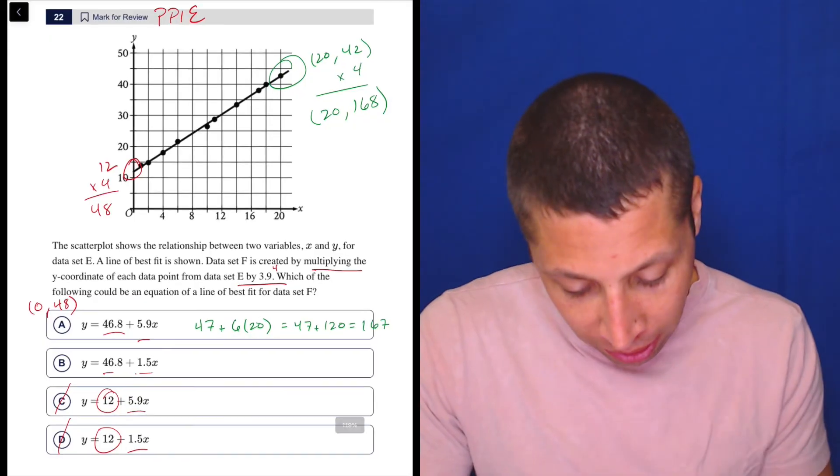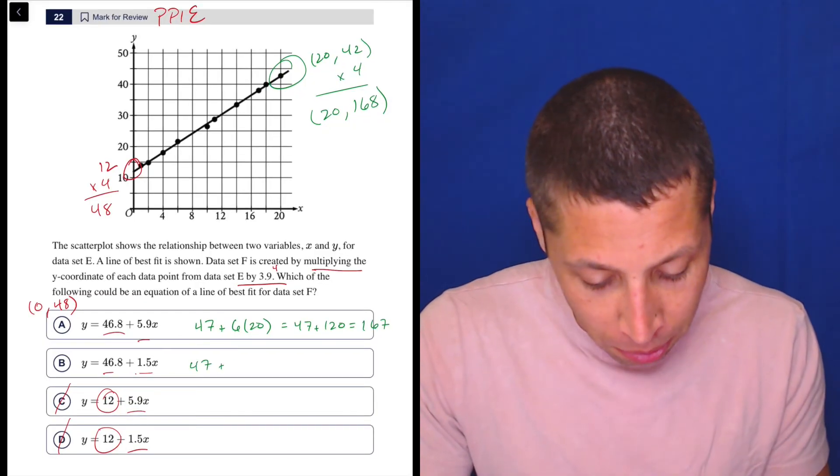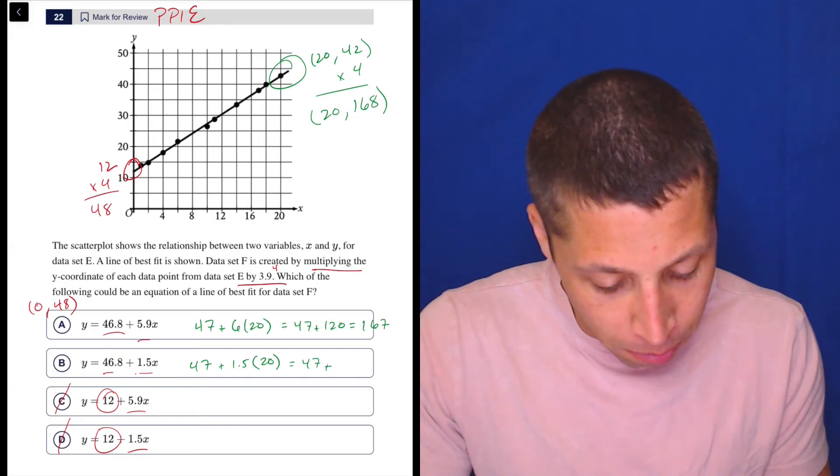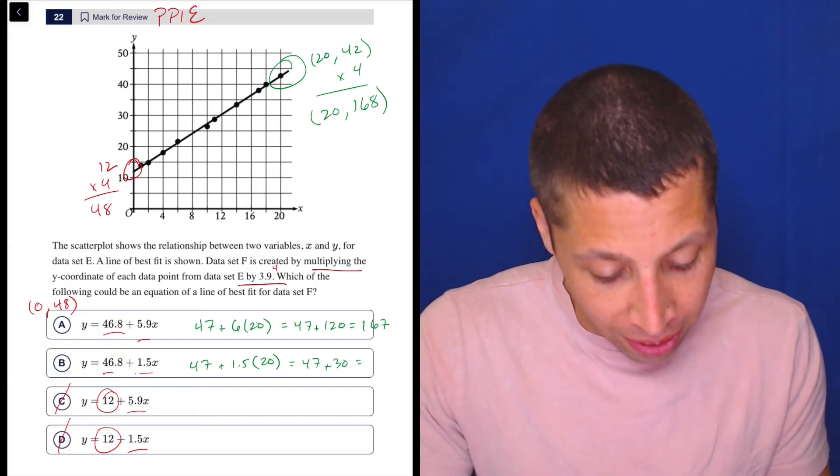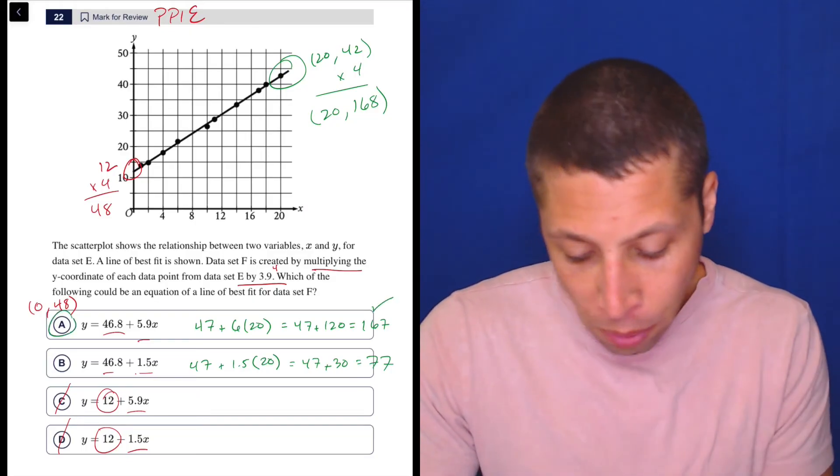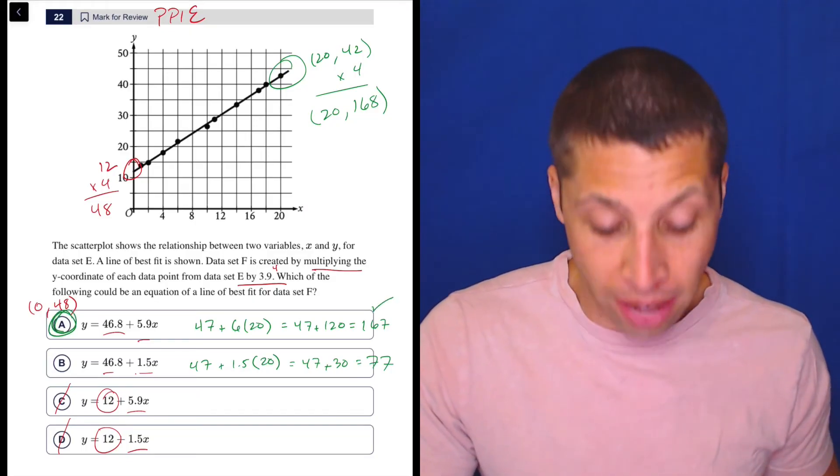So let's look at this other choice, 47 plus 1.5 times 20. So that's 47 plus 30. And that's not even close. That's 77. So that's much closer to what we wanted. Choice A is, in fact, the answer.